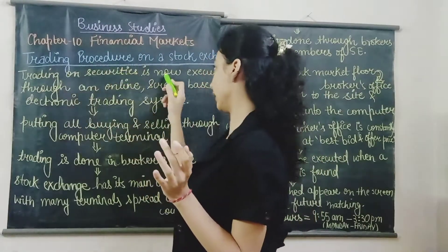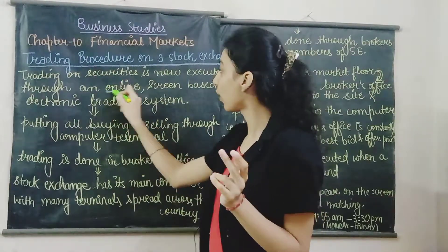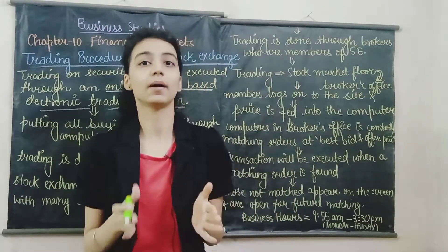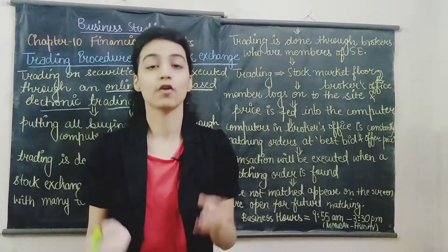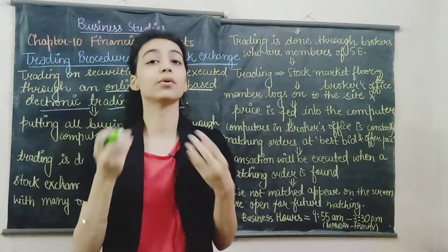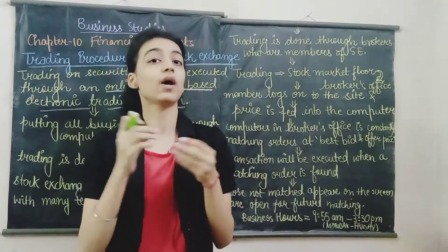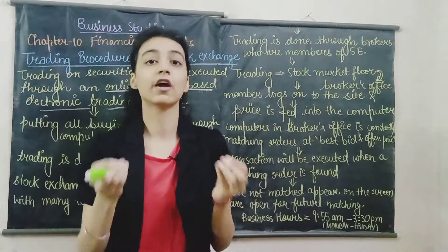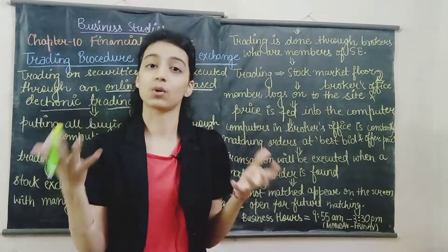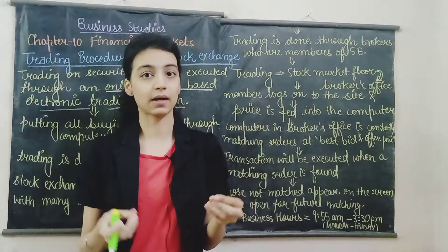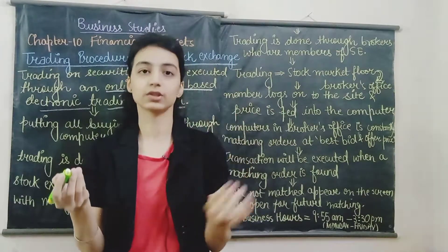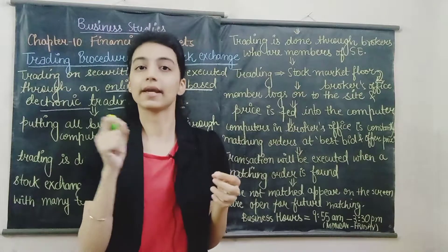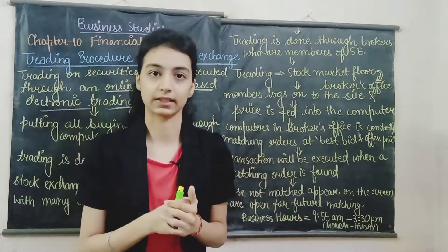Trading on securities is now executed through an online screen-based electronic trading system. This means that trading is done online through computer terminals. Previously, on the stock market floor there was a public outcry system, also called an auction system, where bidders would bid and the highest bidder would be issued the shares by the brokers.